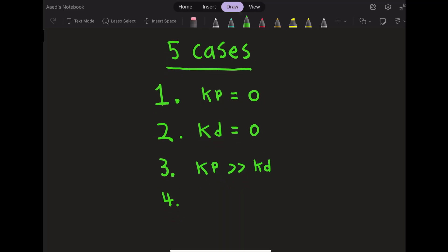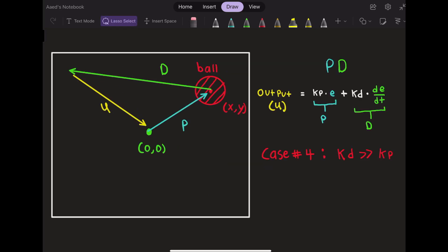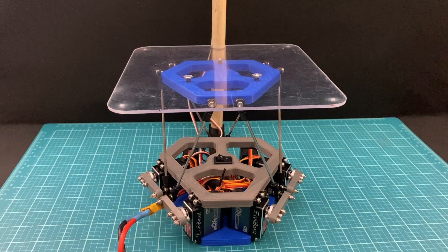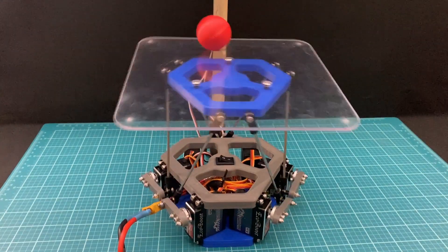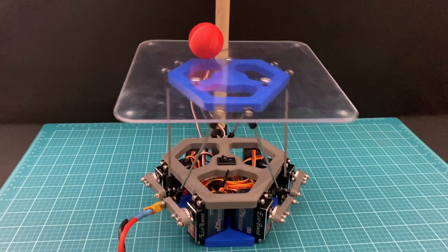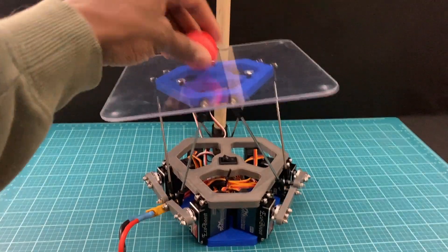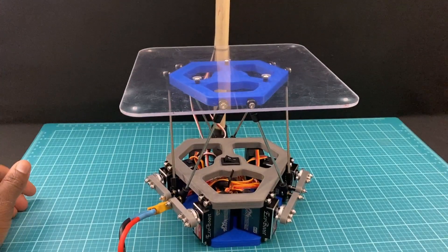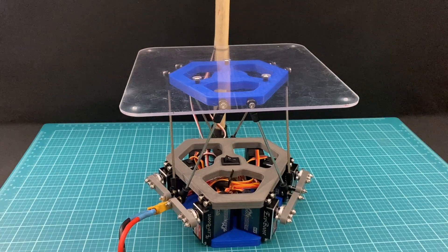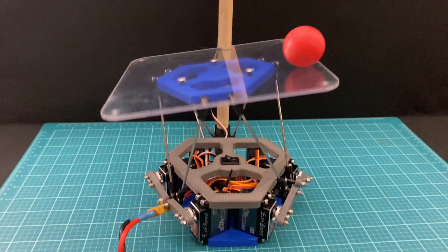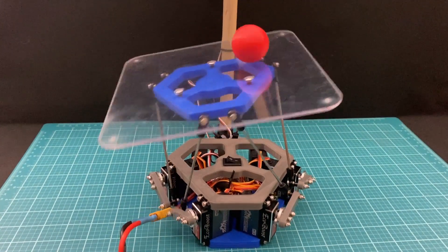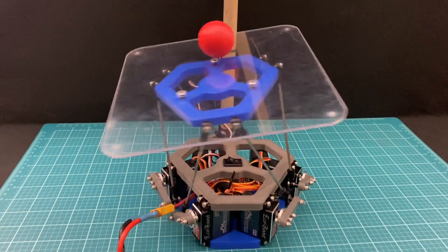The fourth case occurs when kd is too high. In this case, the derivative term overshadows the proportional term. This has a similar effect of a swaying motion. This is because the robot is overcompensating for the velocity of the ball. It tries to excessively slow the ball down, which has the effect of accelerating the ball in the opposite way. In this case, the ball can also never reach equilibrium, and often falls.